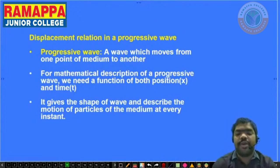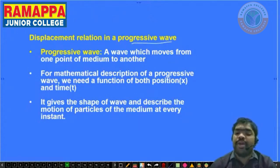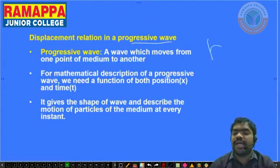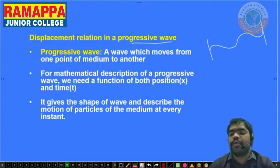A progressive wave is a wave which moves from one point of the medium to another point. It starts at one point and travels to other particles. Progressing means moving — that is why it is called a progressive wave.